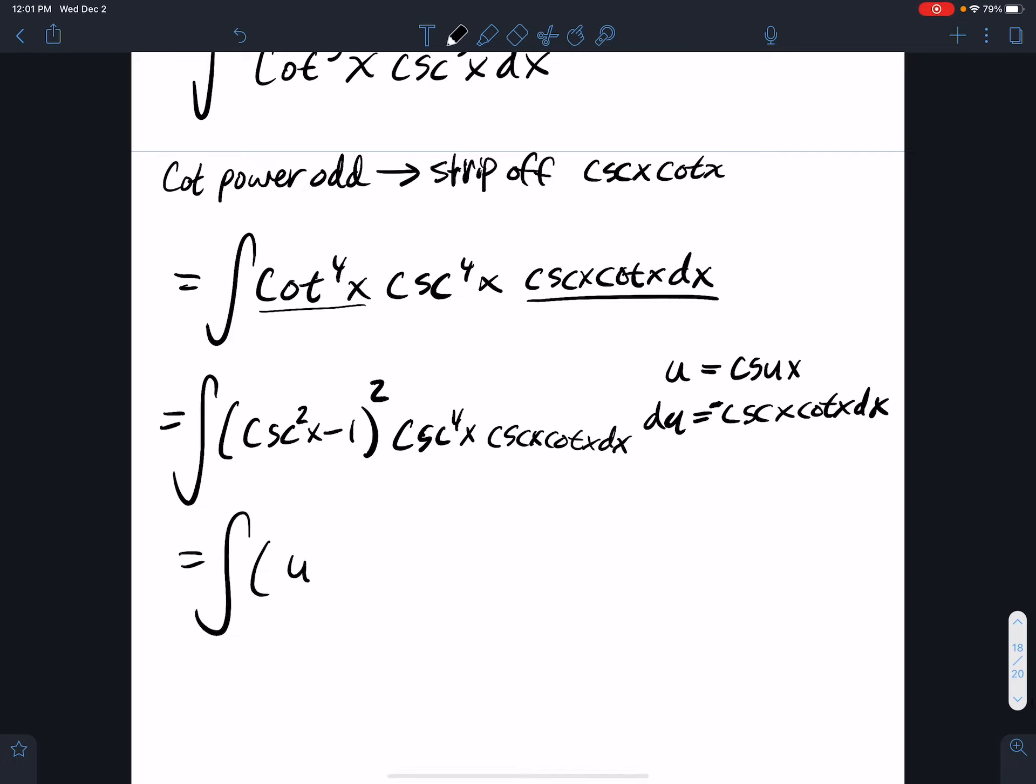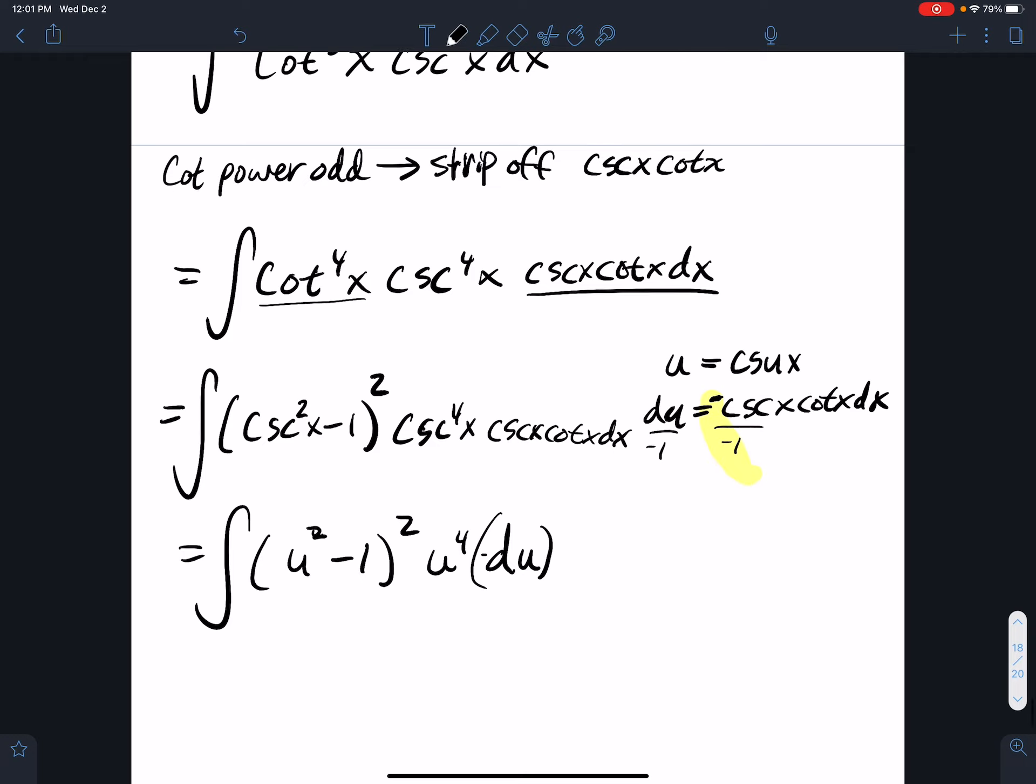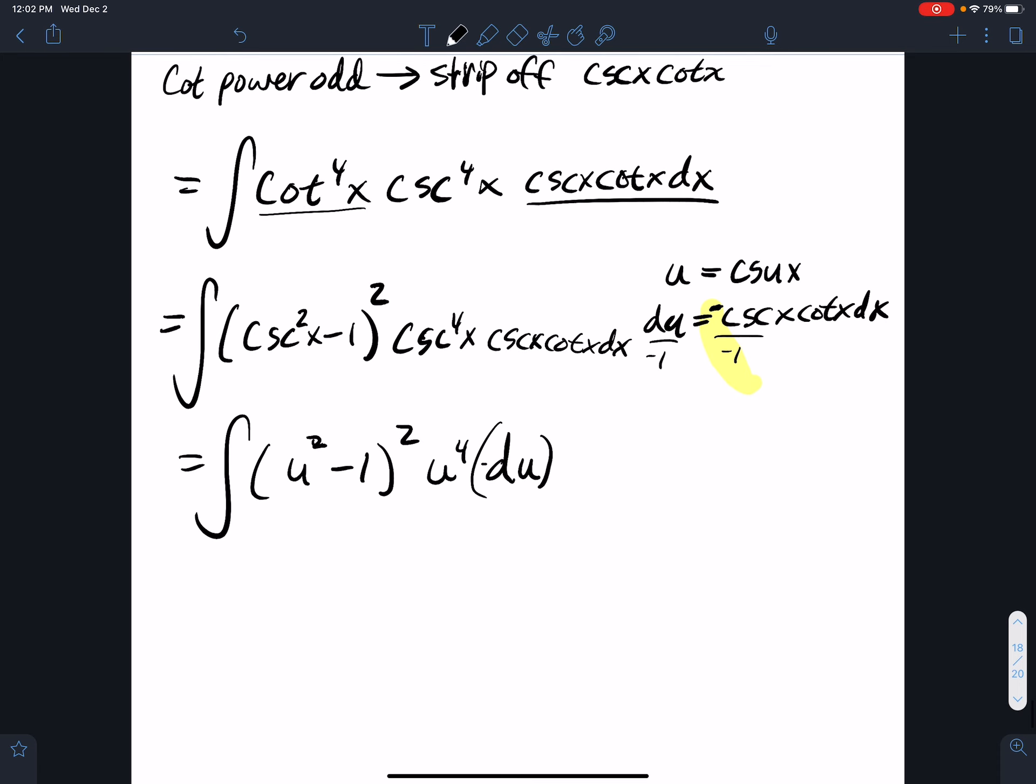minus one squared times u to the fourth du, which is negative du if I divide through by that negative one there, get rid of the negatives. All right, so distribute this through.